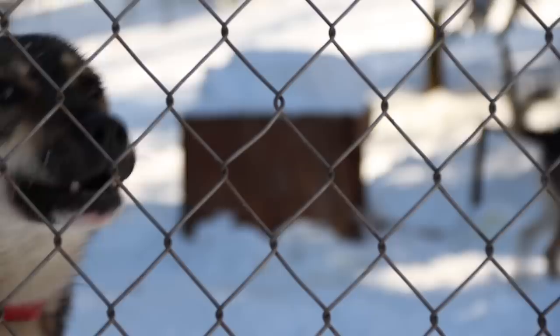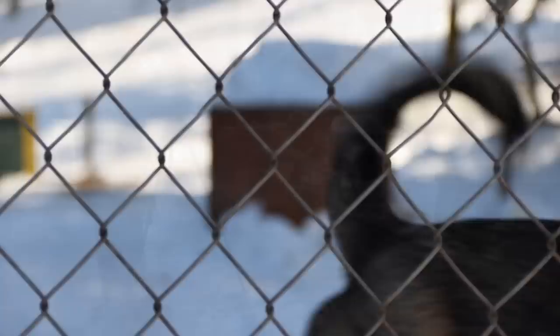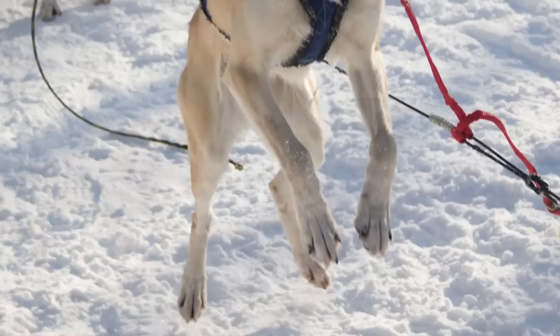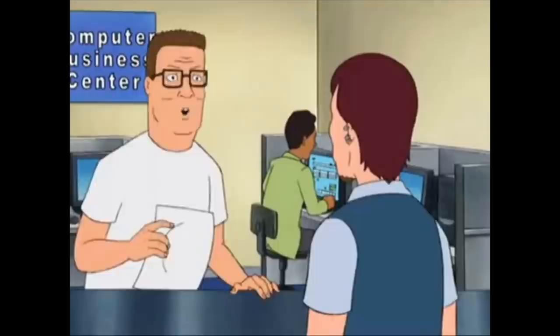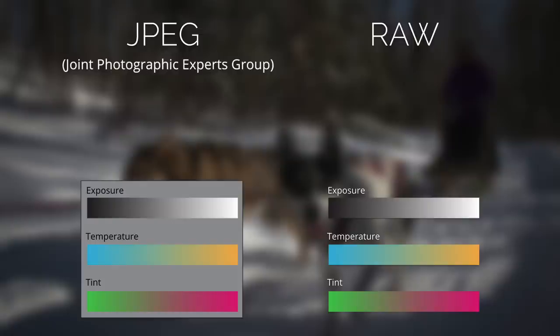RAW photography. You really want to capture those great moments, get those great shots composed, bring them back to your computer, and be able to take full advantage of the data you capture through your sensor and stored onto your SD card or whatever you use to record your pictures. A lot of consumers are familiar with the format on the left — a JPEG. They're pretty standard. You see them on the internet, on people's computers. A lot of consumer cameras record in JPEG.